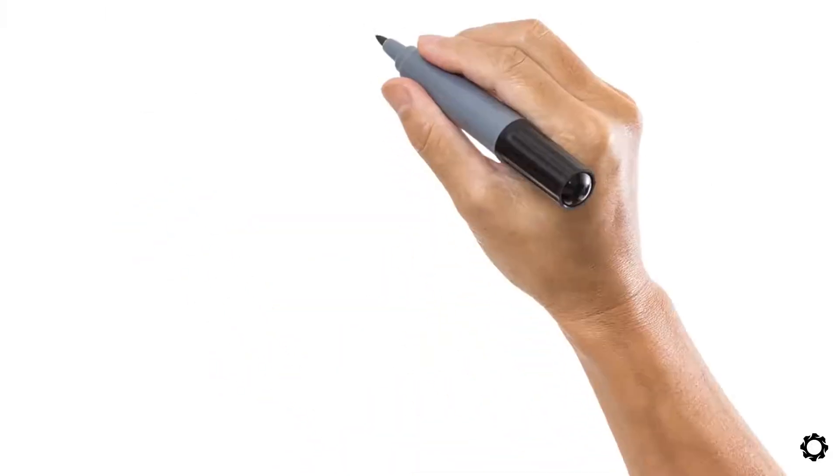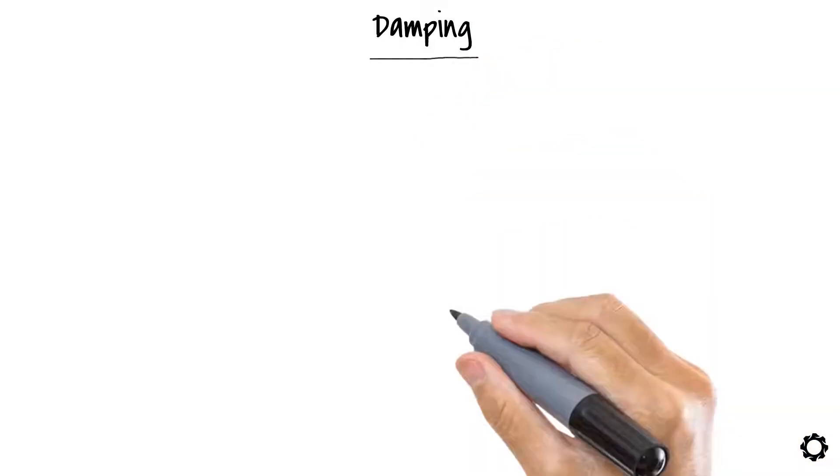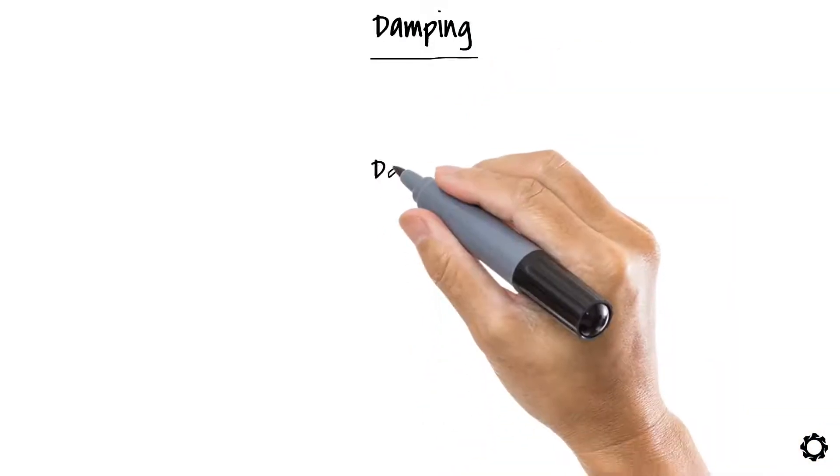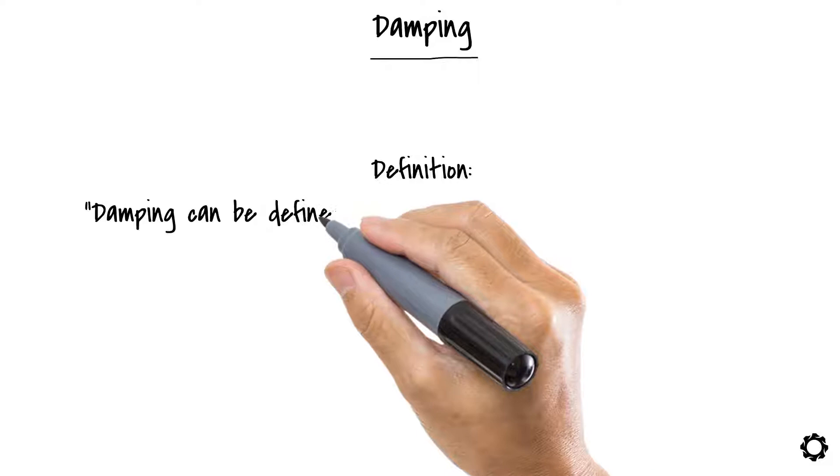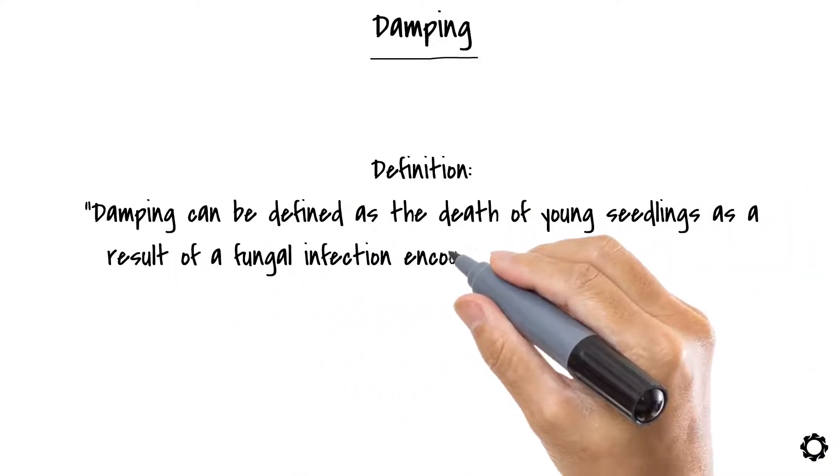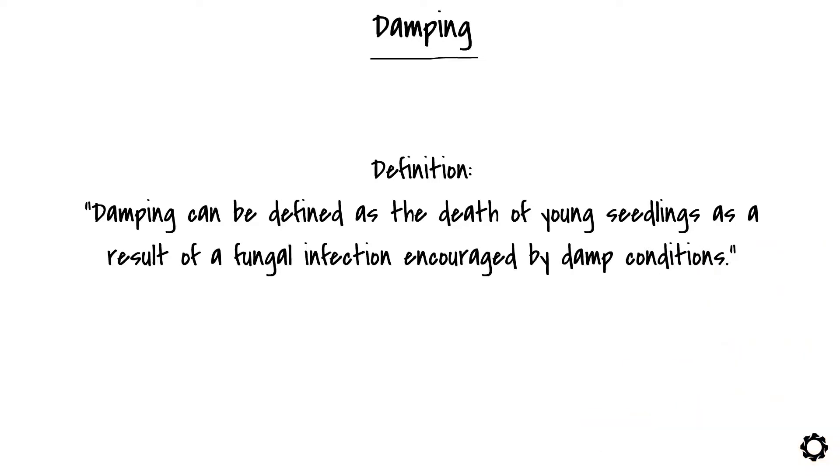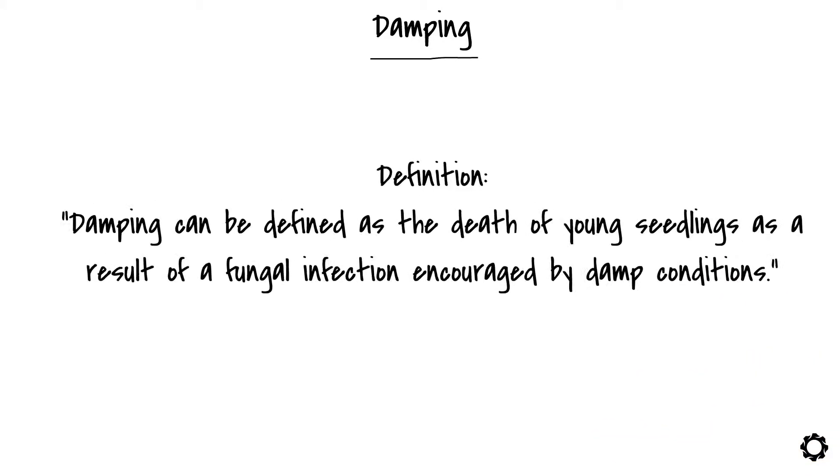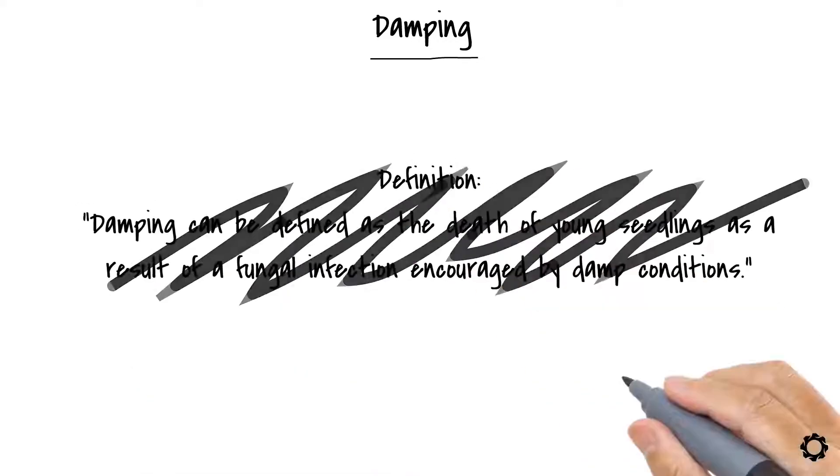Maybe you've heard of damping before, but it's always good to present this definition to all of us again. Damping can be defined as the death of young seedlings as a result of a fungal infection encouraged by damp conditions. Wait, wait, what? Oh no, I think I mixed physics with my gardening notes. Let's try again.